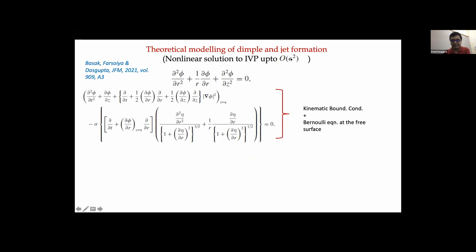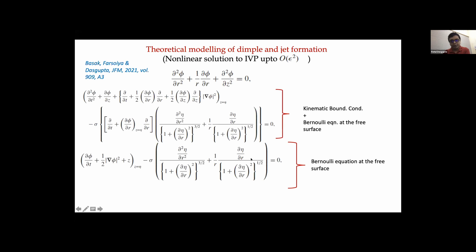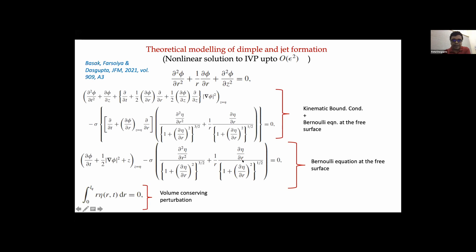We want to solve this problem up to order epsilon squared, where epsilon is a measure of non-linearity. The boundary condition at the surface is obtained using a combination of the kinematic boundary condition and the Bernoulli equation applied at the free surface. We also have the Bernoulli equation with the surface tension pressure jump condition at the interface. There is a parameter sigma here — recall the two non-dimensional parameters are sigma and epsilon. In this calculation, sigma is treated as an order-one quantity and epsilon as a small parameter.